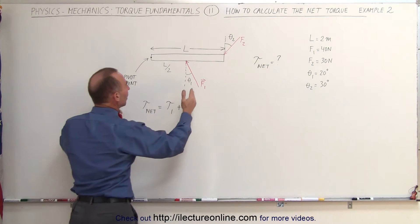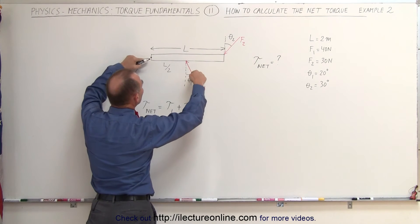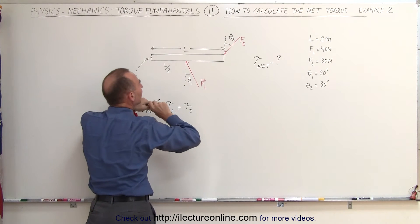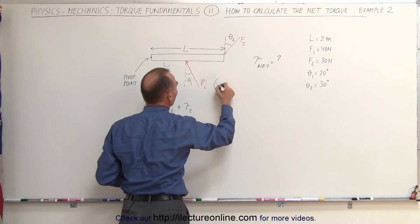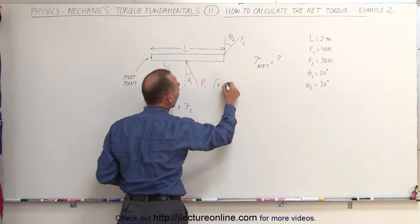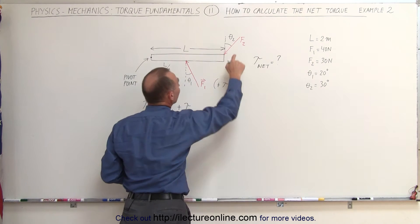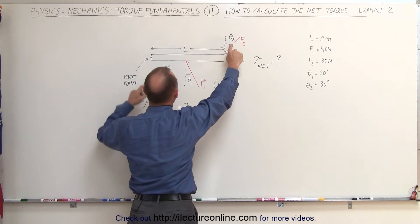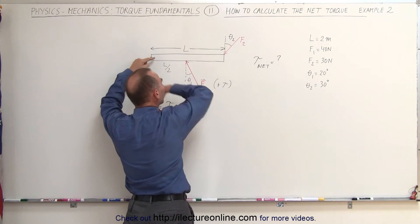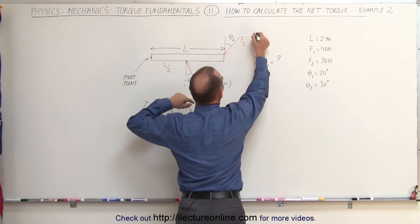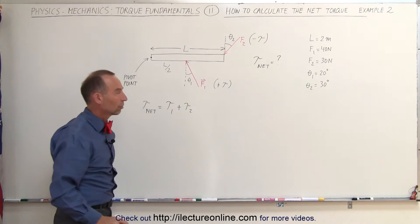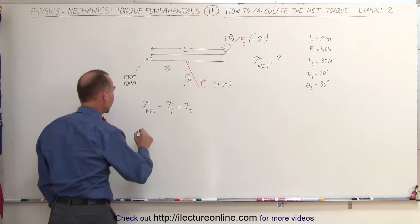Notice that F1, if this was the only force acting on the beam, would cause the beam to rotate in a counterclockwise direction, which makes this a positive torque — F1 will cause a positive torque to exist. And F2, if this was the only force acting on the beam, would cause the beam to rotate in a clockwise direction. This will therefore cause a negative torque.